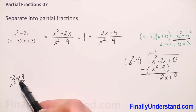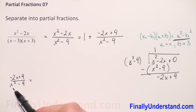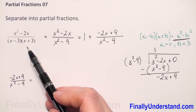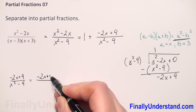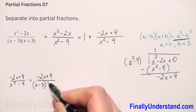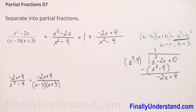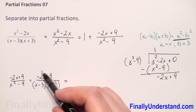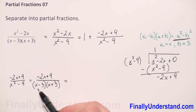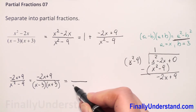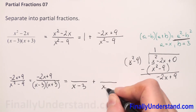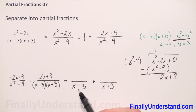We have negative 2x plus 9 over x squared minus 9. We see that the power of the numerator is less than the power of the denominator, so this is OK. Next, we have to factorize our denominator. Because x squared minus 9 is x minus 3 times x plus 3, we have negative 2x plus 9 over x minus 3 times x plus 3. Now every factor becomes a denominator, so we will have a first partial fraction with denominator x minus 3 and a second with denominator x plus 3.